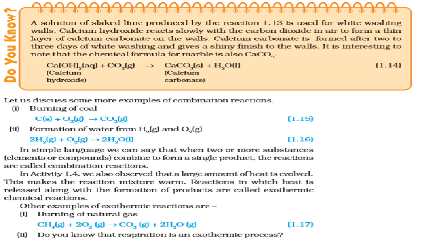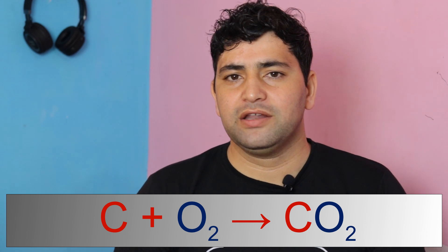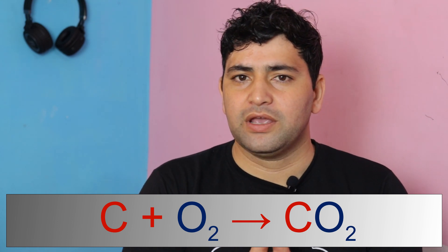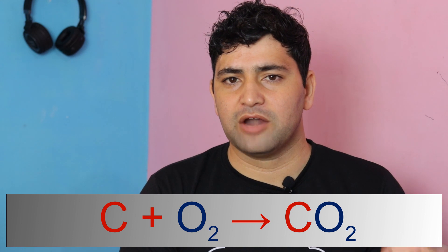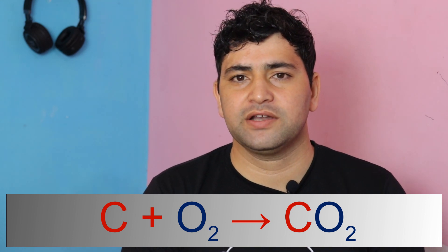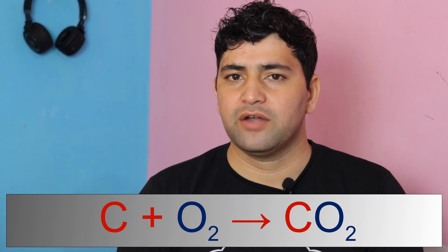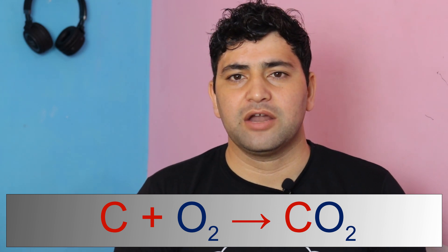Let us take some examples from daily life and from your NCERT book, pages six and seven. The first example is burning of coal, or carbon. When carbon burns in the presence of oxygen, it forms carbon dioxide gas. In this reaction we have two reactants — carbon and oxygen — and they combine to form a single product, carbon dioxide gas.